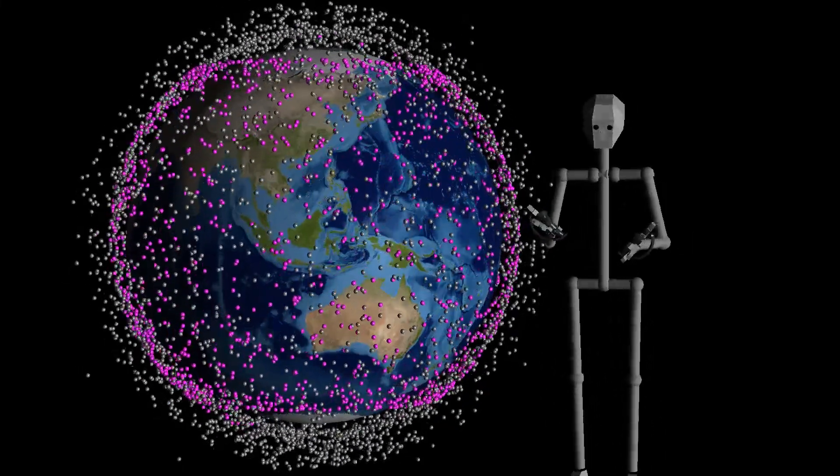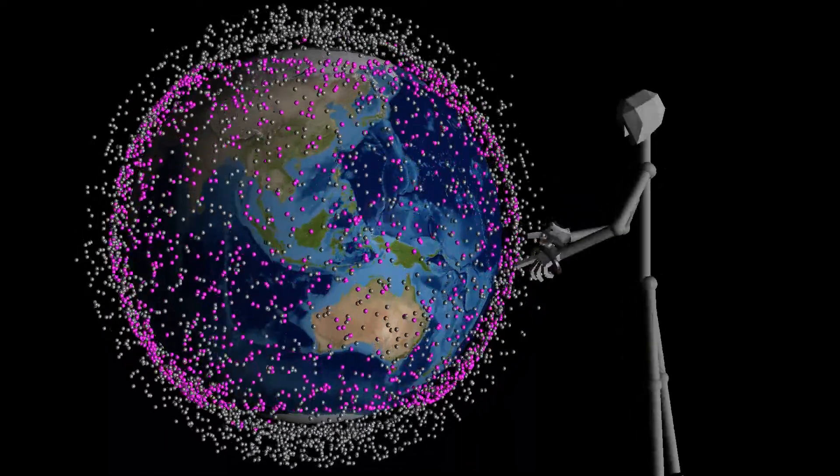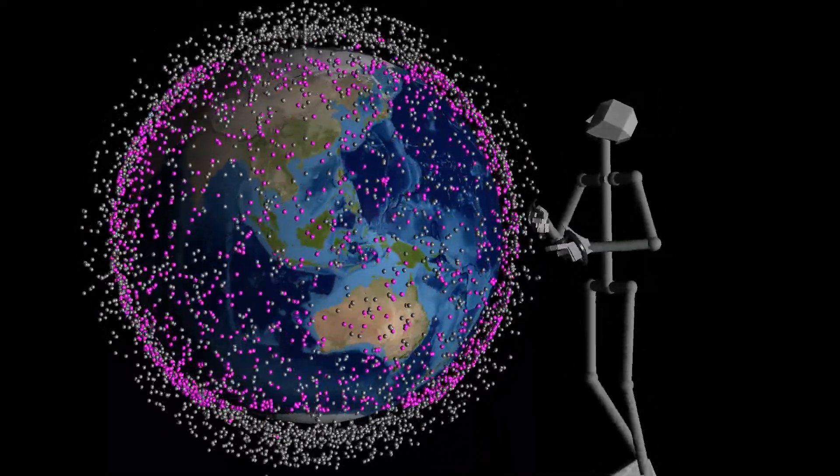Anyway, that was the Starlink satellite constellation. What I was really looking for was the entire catalogue of low-Earth orbit objects, and there are a bunch more of those.